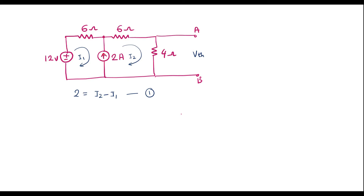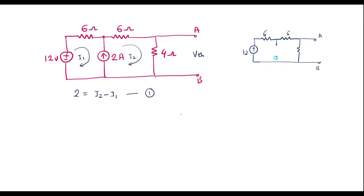After analyzing the current source, we assume it is removed from the circuit. The redrawn circuit has 6Ω, another 6Ω, and 4Ω resistors, with a 12V voltage source. Terminal A and terminal B are marked. The current source branch is removed, with I1 flowing in the first part and I2 in the second.